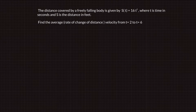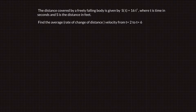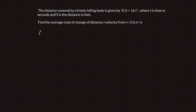The distance covered by a freely falling body is given by s of t equals 16t squared, where t is the time in seconds and s is the distance in feet. Find the average rate of change of distance, or average velocity, from t equals 2 seconds to t equals 6 seconds. The average velocity v-avg from t equals 2 to t equals 6 seconds is given by s of 6 minus s of 2 divided by 6 minus 2.